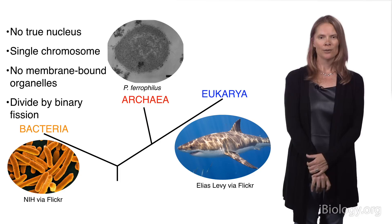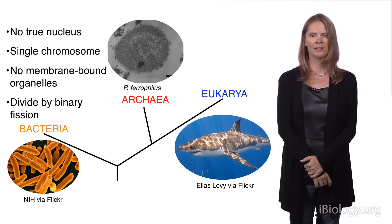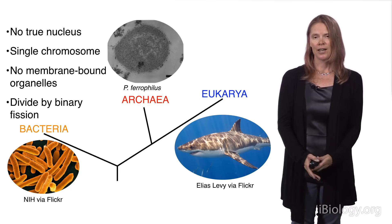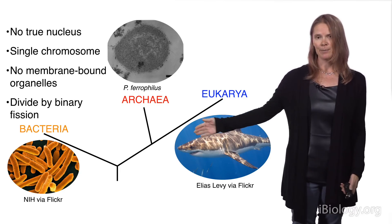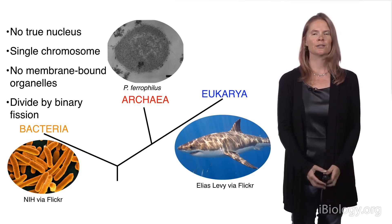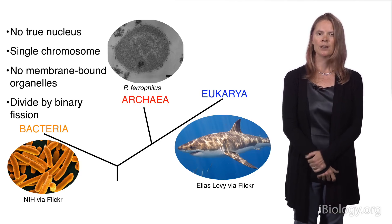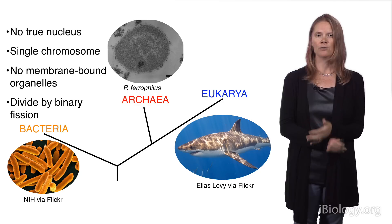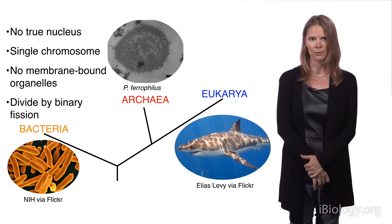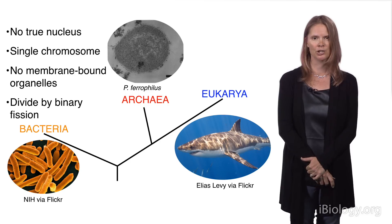Microbes are so-called simple organisms, but in fact they can do some pretty complex things. Shown here is a very basic tree of life, where we have the two domains of life that belong to microbes: bacteria and archaea. Microbes have no true nucleus, they have a single chromosome, they don't have any membrane-bound organelles, and they divide by simple binary fission.